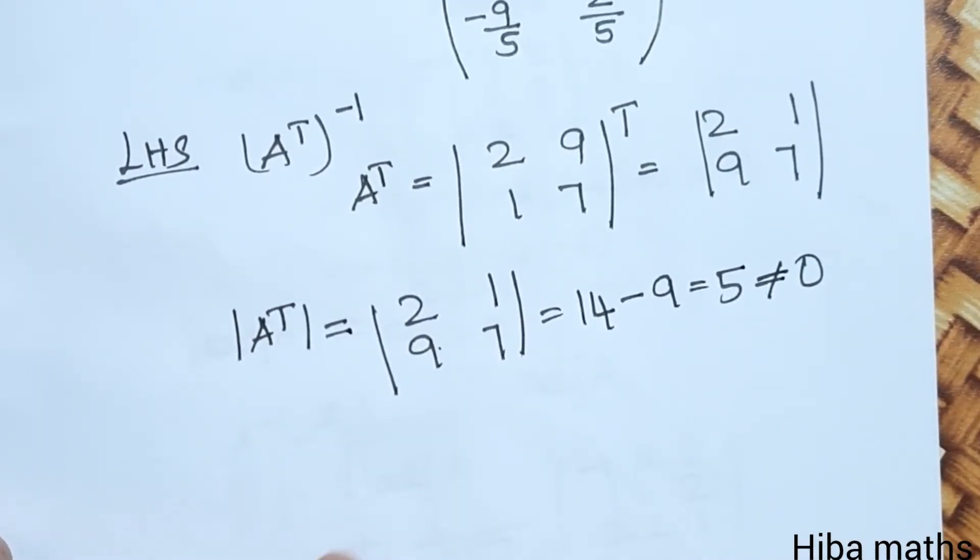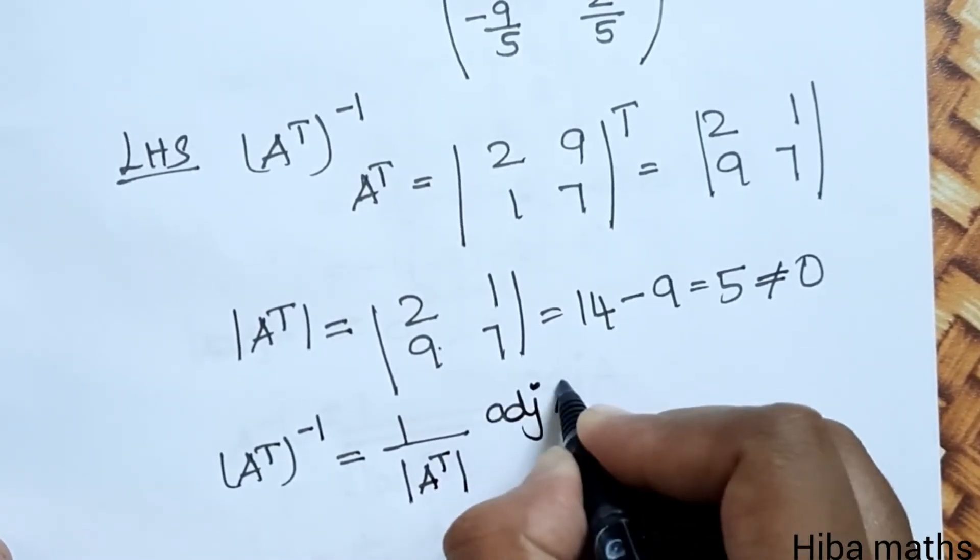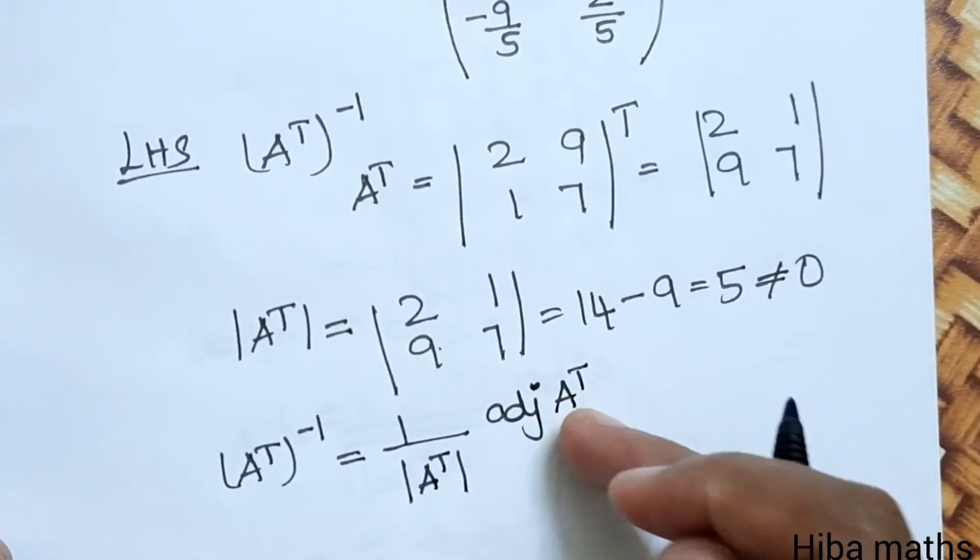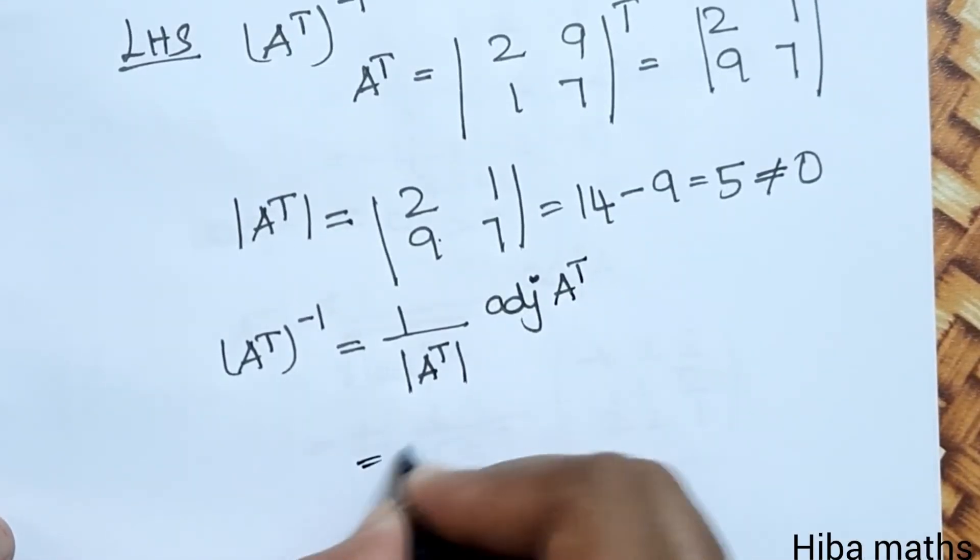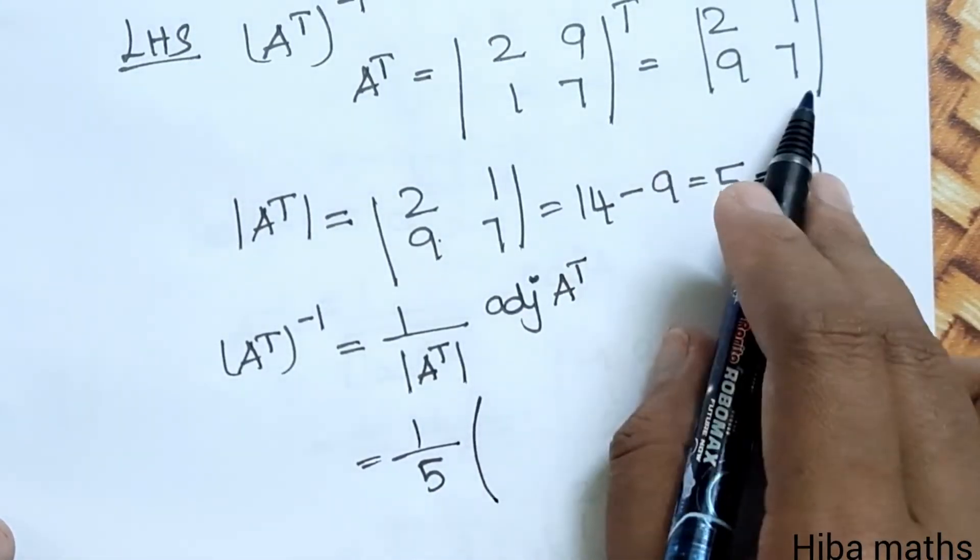Now solve it. A transpose inverse, that is 1 by modulus of A transpose into adjoint of A transpose. The A transpose adjoint. That is equal to 1 by 5 into the adjoint value.